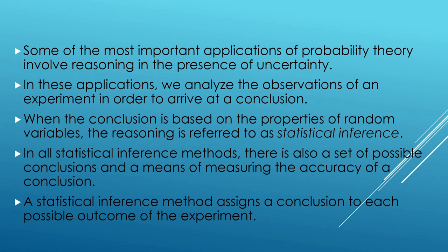In these applications, we analyze the observations of an experiment in order to arrive at a conclusion. So in applications where uncertainty prevails, first we analyze the observations of an experiment, and then we make the conclusion. When the conclusion is based on the properties of random variables, the reasoning is referred to as statistical inference. Wherever random variables are involved and we have to do reasoning, we apply statistical inference.